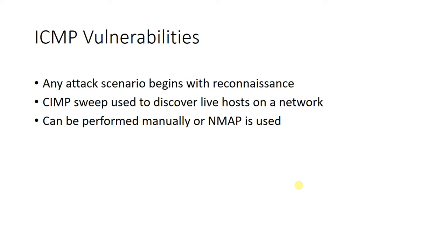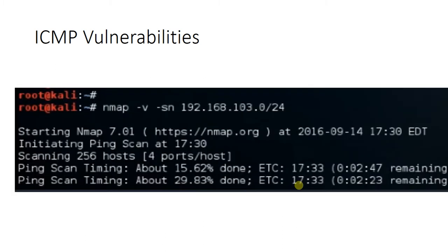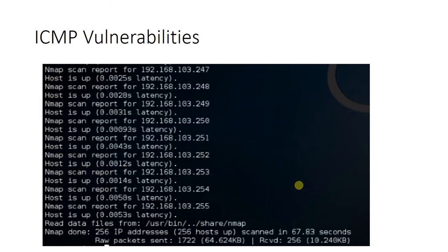This type of attack can be performed manually, but more often than not an application such as Nmap is used. In this example, we are using a command string to Nmap that instructs the application to scan the entire 192.168.103.0/24 network and return a list of hosts that respond. Using this information, an attacker can begin to create a map of the network.